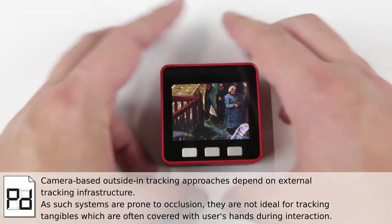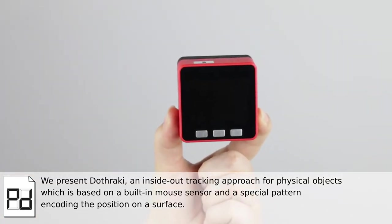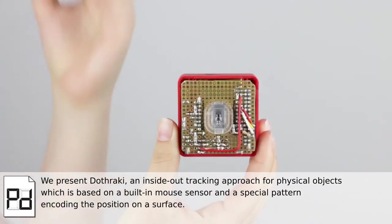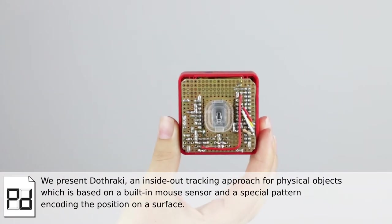which are often covered with the user's hands during interaction. We present DOTRAKI, an inside-out tracking approach for physical objects, which is based on a built-in mouse sensor and a special pattern encoding the position on a surface.